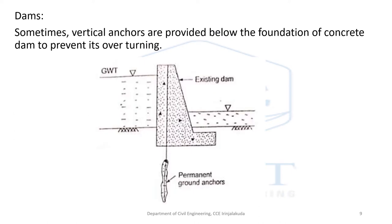Here is an illustration of some applications. In dams, vertical anchors are provided below the foundations of concrete dams to prevent overturning. One essential cause of overturning of dams is hydrostatic pressure from the side. To permanently anchor the dam, we can provide permanent ground anchors.